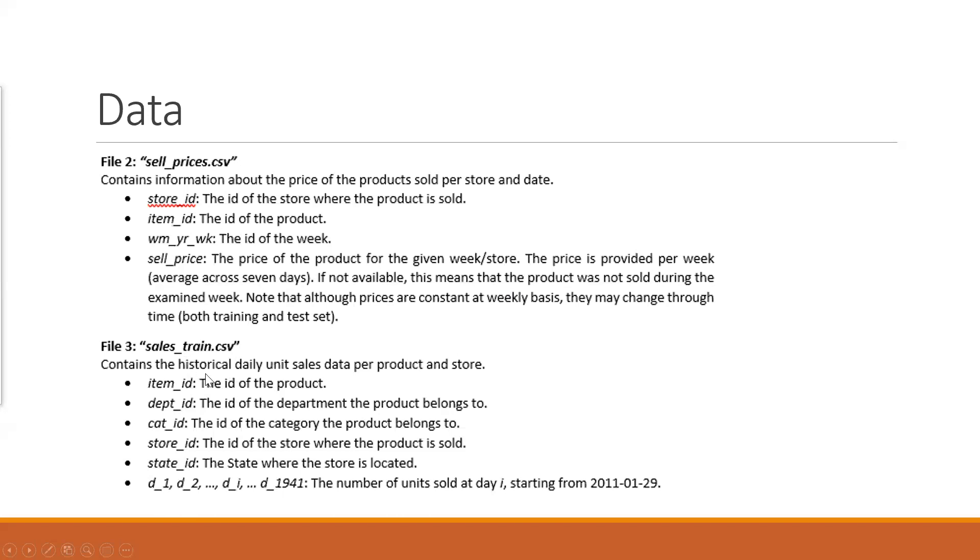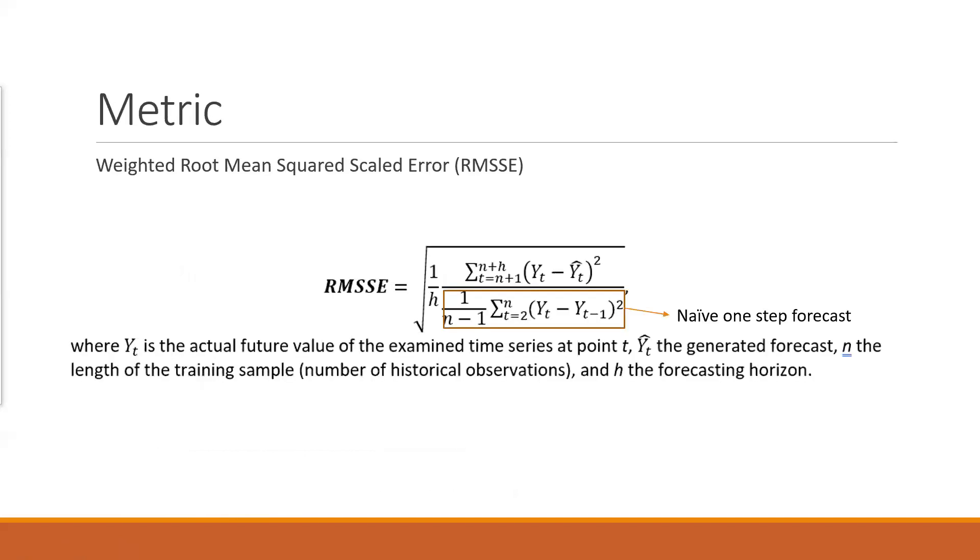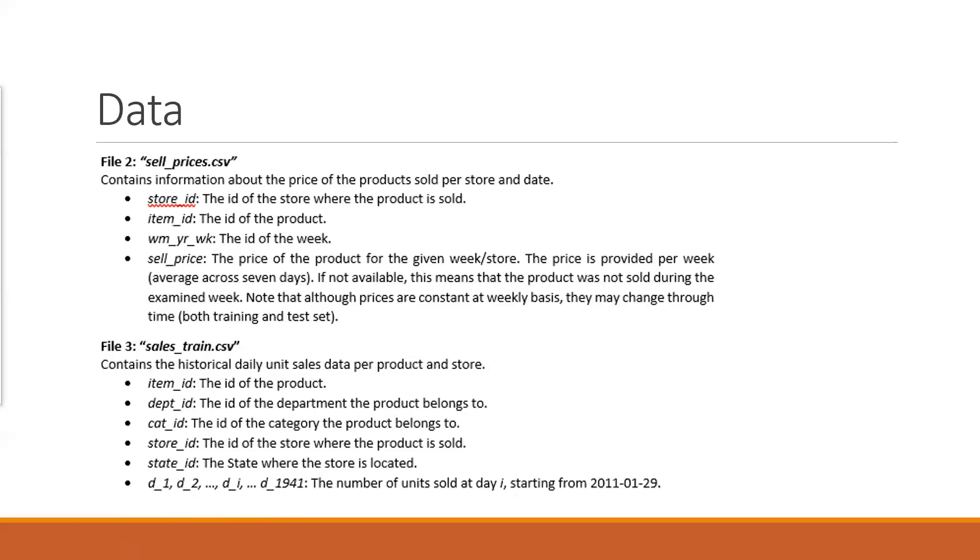And then in the training data, we mainly have the sales. We have how many unit sales per product and store. We have the item ID, department ID, the product categories and the store IDs. And also the sales of the item at that store, from day one to day nearly 2000. So that's the introduction to the data.